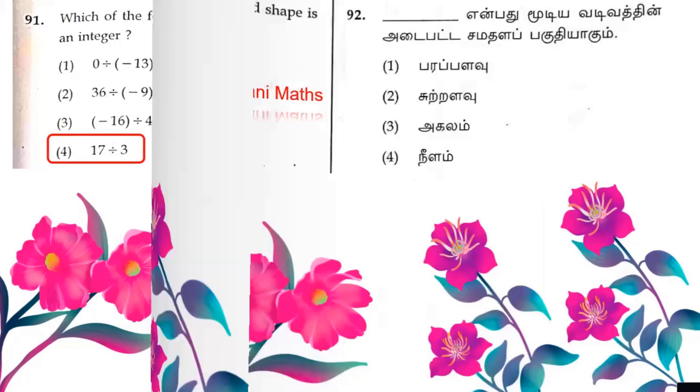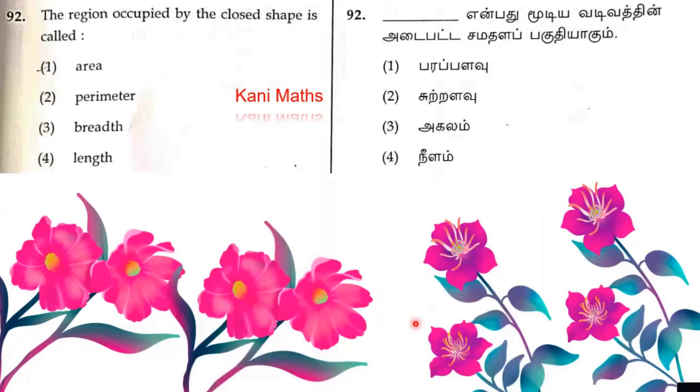Question number 92. The region occupied by the closed shape is called area.